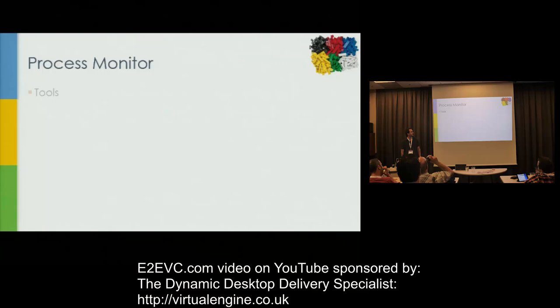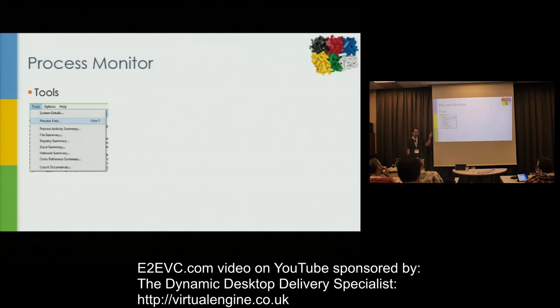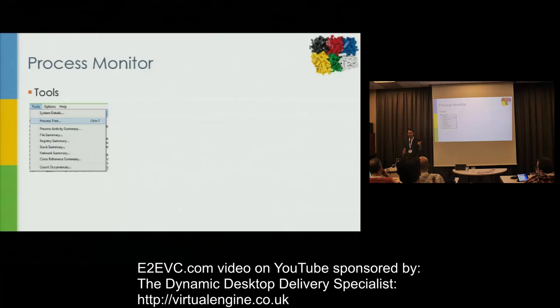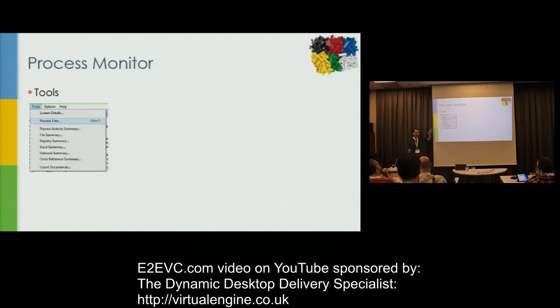There is a menu called Tools, and it gives you a few ways to get an overview of all the data you've captured. If you know exactly what you're looking at you can start with a filter, but if it's just a bunch of data and you don't know what you're looking at, you have the Tools menu. It will show quite a few interesting things — focused on summaries of different stacks, basically.